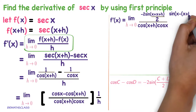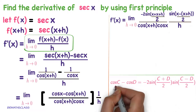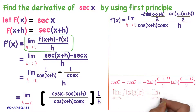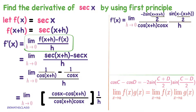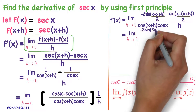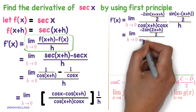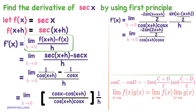So we get minus 2 sin of C plus D by 2, into sin of C minus D by 2, where C is x and D is x plus h, so C minus D by 2 gives minus h by 2. This is divided by cos of x plus h into cos x, whole divided by h. We know the limit product formula: limit h tends to 0 of f of x into g of x equals limit of f of x into limit of g of x. Apply that formula here. Limit h tends to 0, minus 2 sin of 2x plus h divided by 2, whole divided by cos of x plus h into cos x.